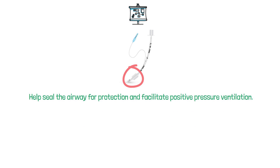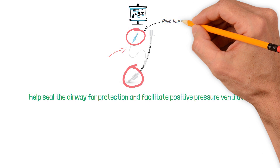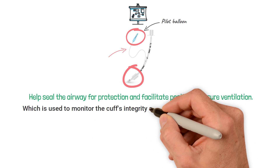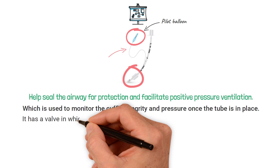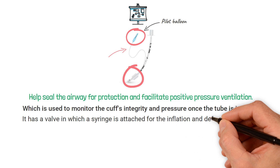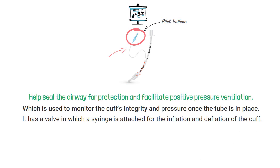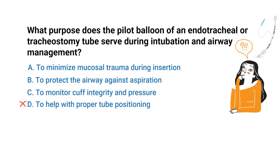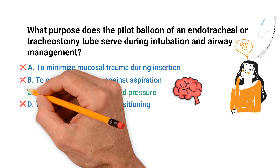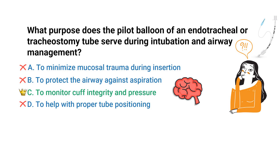The cuff of an endotracheal and tracheostomy tube is designed to help seal the airway for protection and facilitate positive pressure ventilation. Hanging from the cuff is the pilot balloon, which is used to monitor the cuff's integrity and pressure. Once the tube is in place, it has a valve where a syringe is attached for inflation and deflation of the cuff by pumping air in or removing air.